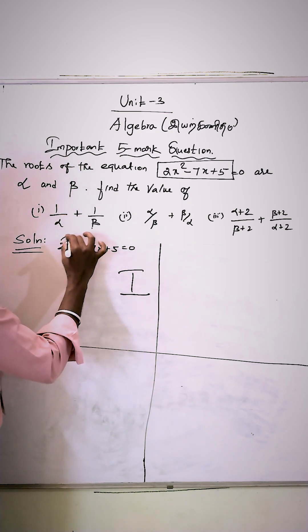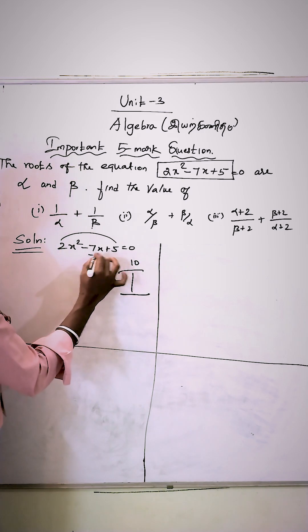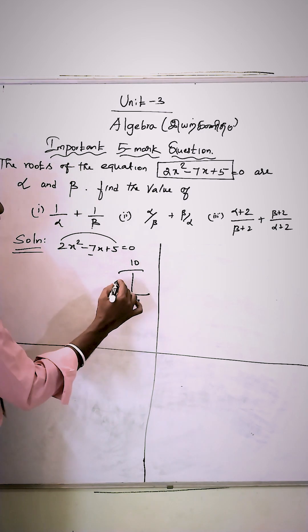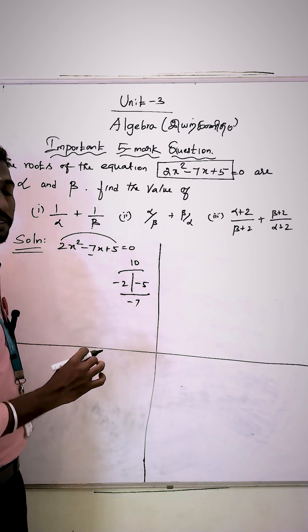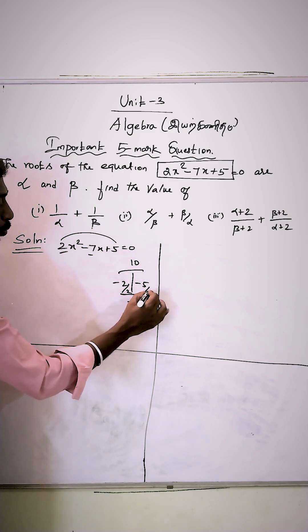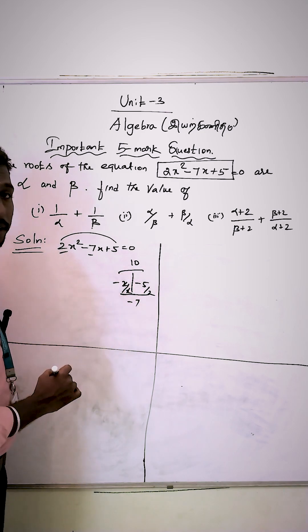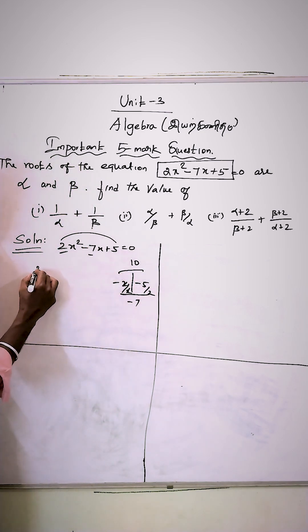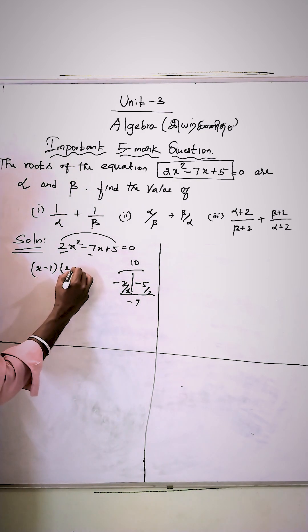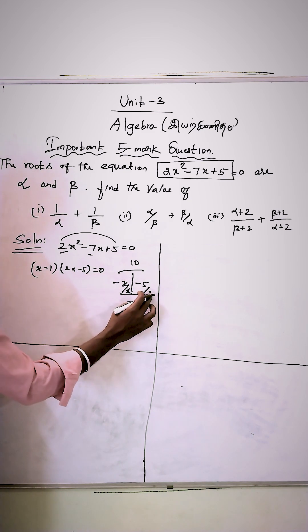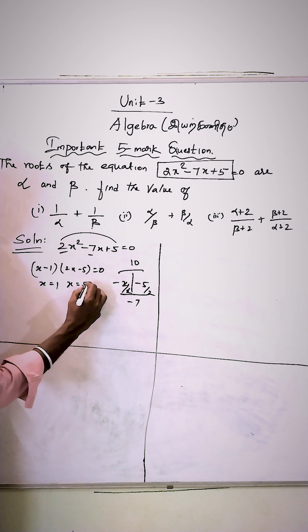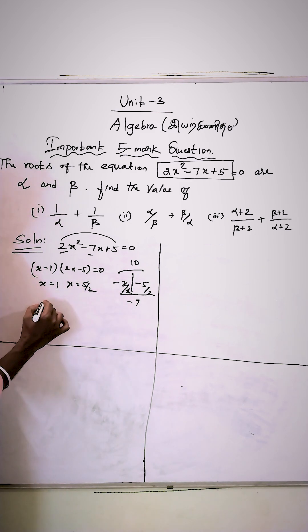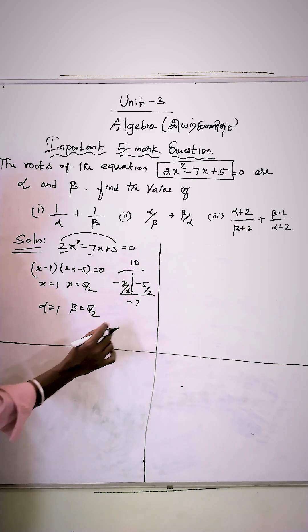The equation 2x² minus 7x plus 5 equals 0 can be factorized as (2x minus 5)(x minus 1) equals 0. So x equals 1 or x equals 5 by 2. Therefore, alpha value is 1 and beta value is 5 by 2.